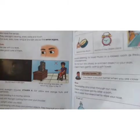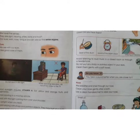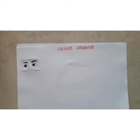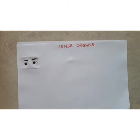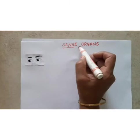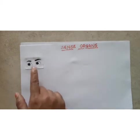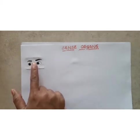Today we are going to do an activity on five sense organs on paper. First of all, you take an A4 size paper. First, write here: Sense Organs. It is our today's activity subject.